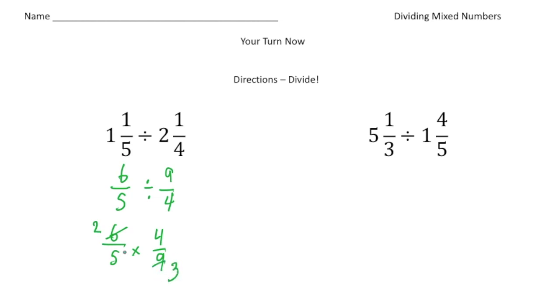And now we can just multiply. So two times four gives us eight. And five times three gives us fifteen. And there it is.